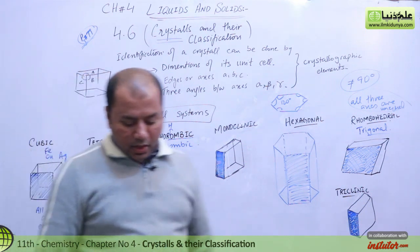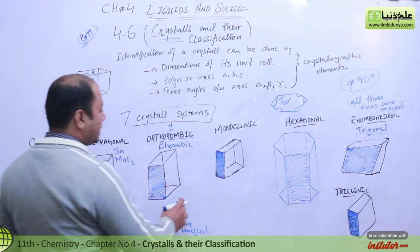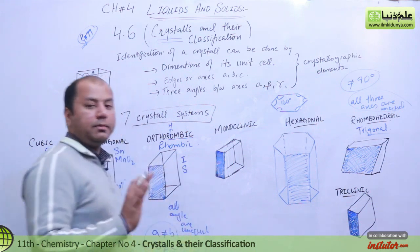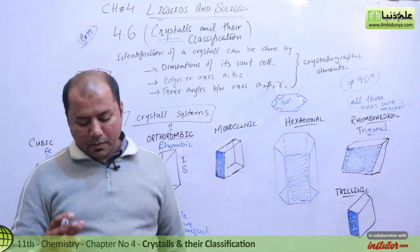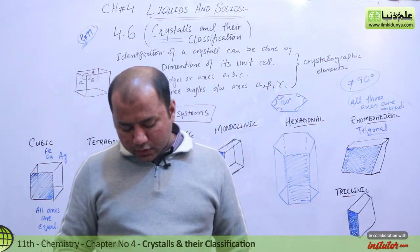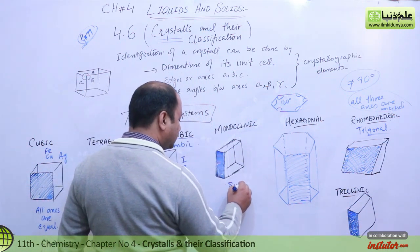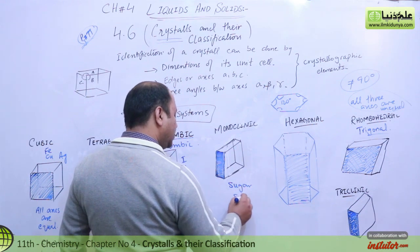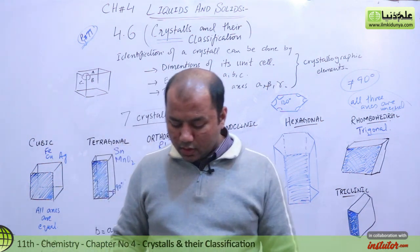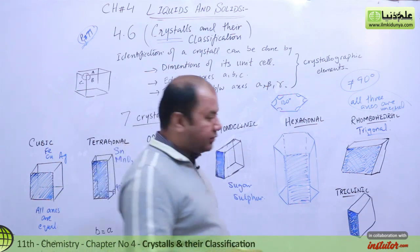For monoclinic, examples are sugar and sulfur — sulfur also exists in monoclinic form. For hexagonal, examples are graphite (carbon in the form of graphite), zinc, and ice. Potassium nitrate and aluminium oxide are very important examples for the rhombohedral/trigonal system. For triclinic, the example is cuprous sulfate pentahydrate.